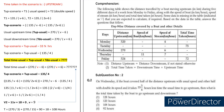Coming to the second question: on Wednesday, if the boat covered half of the distance upstream with usual speed and the other half with double its speed, and it takes 33¾ hours less time than the usual time to go upstream. Let's split the statement. If the boat covered half the distance with speed V and the other half with double its speed, that becomes 2V.